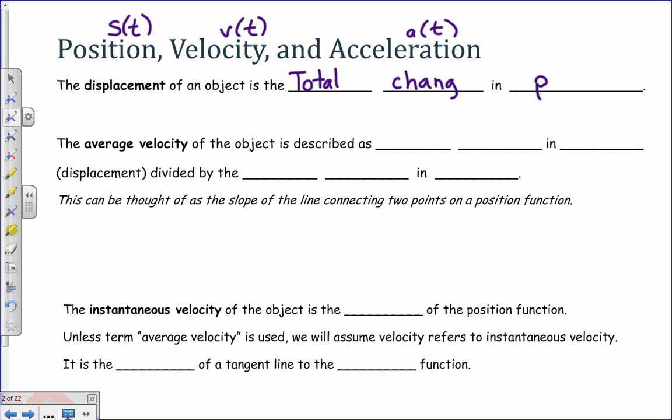So you would look at the position function, and you would subtract the distance from your ending point, S of B, minus your initial point, S of A. So it's the change in distance.